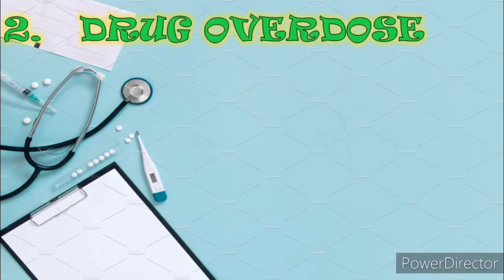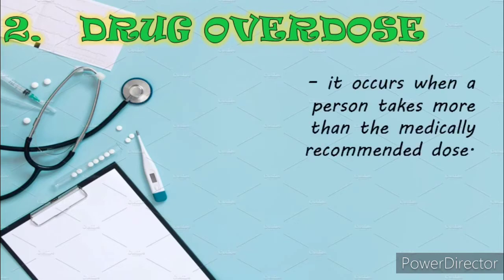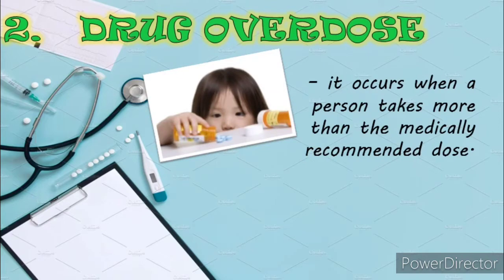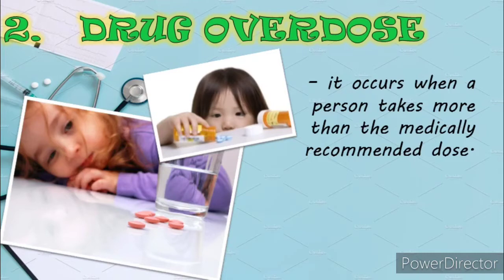Number two, drug overdose. Overdoses of drugs or chemicals can be either accidental or intentional. A drug overdose occurs when a person takes more than the medically recommended dose. However, some people may be more sensitive to certain medications, so the high end of the therapeutic range of a drug may be toxic for them. Young children may swallow drugs by accident due to their curiosity. Children younger than five years tend to place everything they find into their mouths, and overdoses in this age group are generally caused when someone accidentally leaves medication within the child's reach.